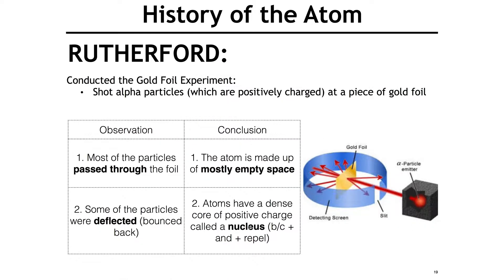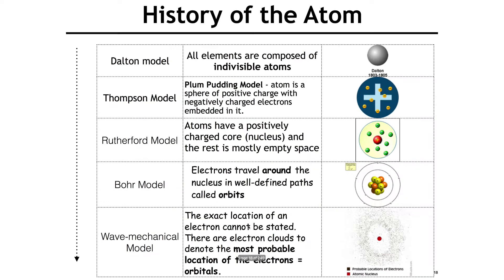The most important one is Rutherford. He conducted the gold foil experiment — he took a piece of gold foil and shot alpha particles, which are positively charged, at it. Most of them passed through the foil, so he determined the atom is mostly made up of empty space. Some particles were deflected and bounced back, so he determined the atom has a dense core of positive charge, which he called the nucleus, because positive and positive repel.